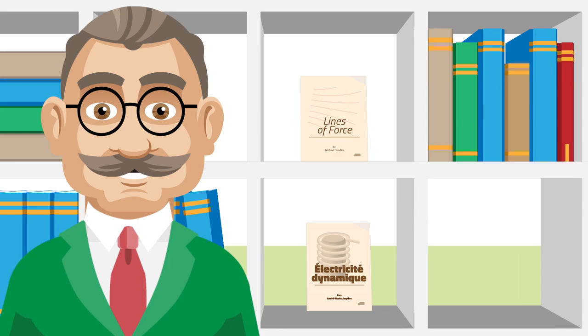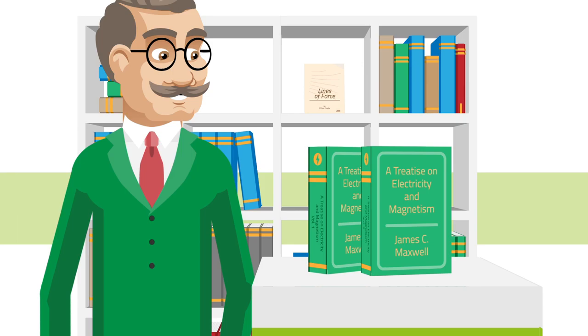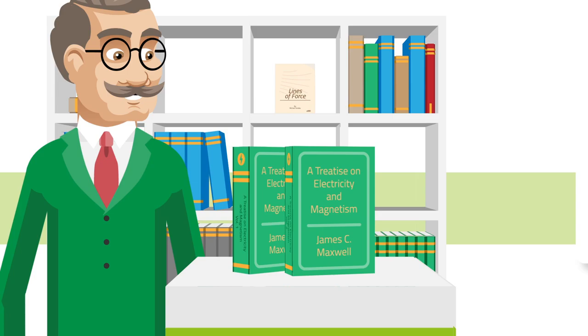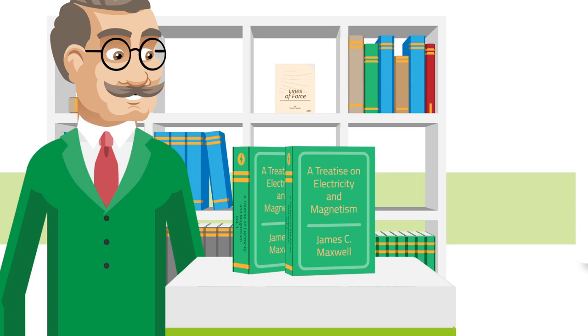Maxwell described the electromagnetic domain by means of a few laws. He published his findings in a treatise on electricity and magnetism. The two volumes are still for sale. Albert Einstein called James Clerk Maxwell's work the most important event in physics since Newton's time.